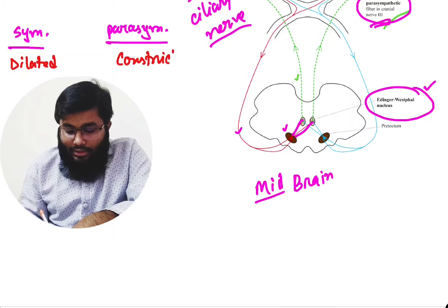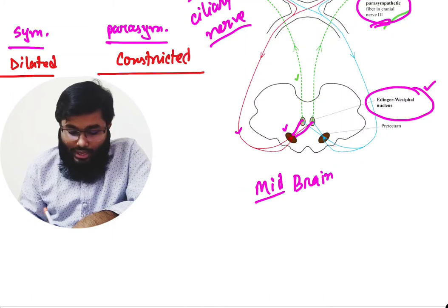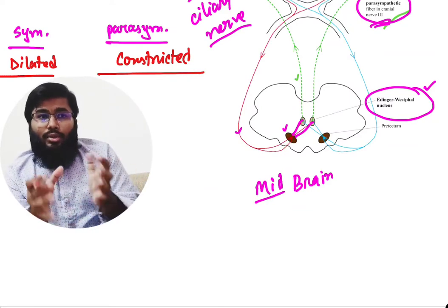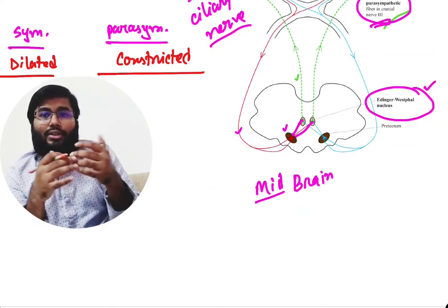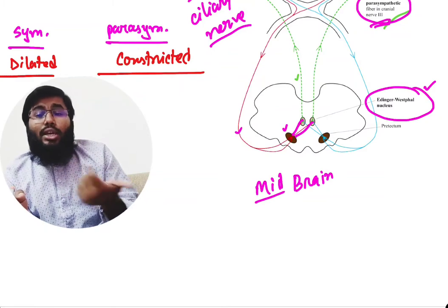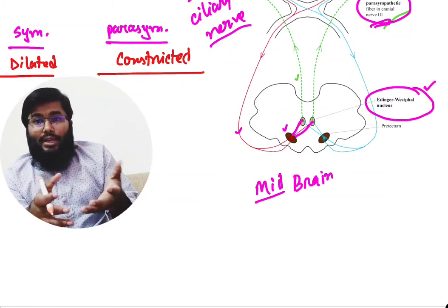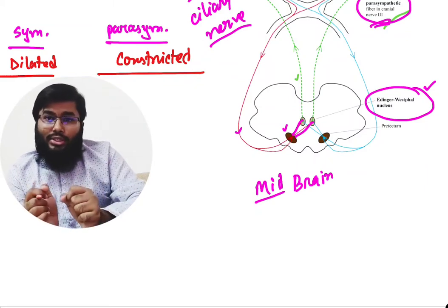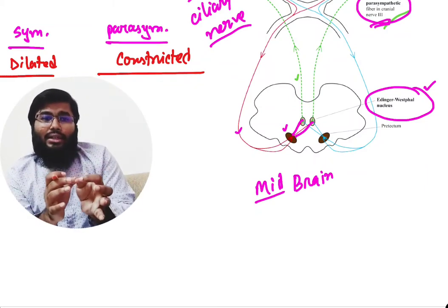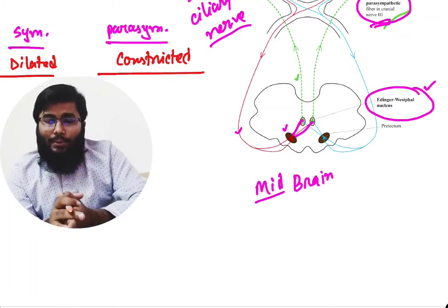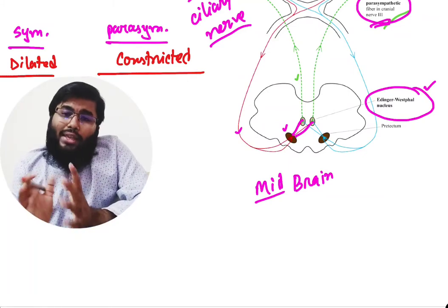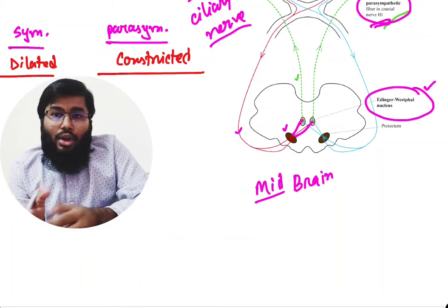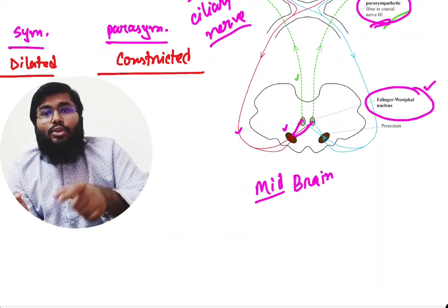There is always a balance between constriction and dilatation. When we are in a dark condition or dim light, the pupil usually dilates. When there is bright light, the pupil constricts because it wants to allow less light into our eyes. If parasympathetic fibers are destroyed, the sympathetic fiber will gain the upper hand and cause dilatation of the pupil.